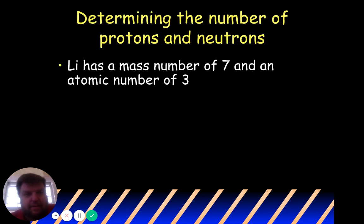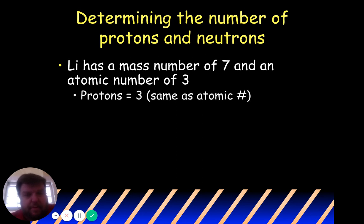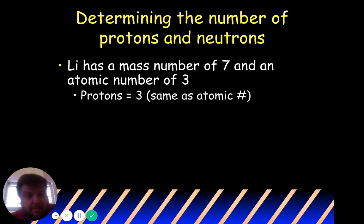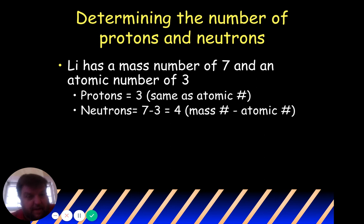So for lithium (Li), the mass number is seven and the atomic number is three. Protons equals three — same as the atomic number. Neutrons equals seven minus three, which is four.